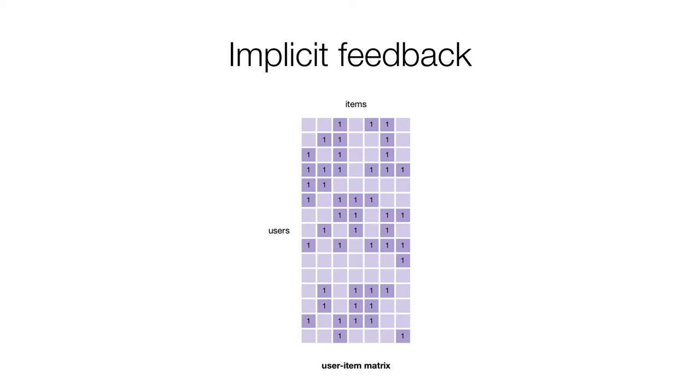The information retrieval task we address here is collaborative filtering with implicit feedback. In this scenario, we have a set of users, a set of items, and a set of user-item interactions in the form of a sparse user-item matrix. We assume here that the user-item matrix is binary. In other words, it is only recorded whether a user has interacted with an item or not.